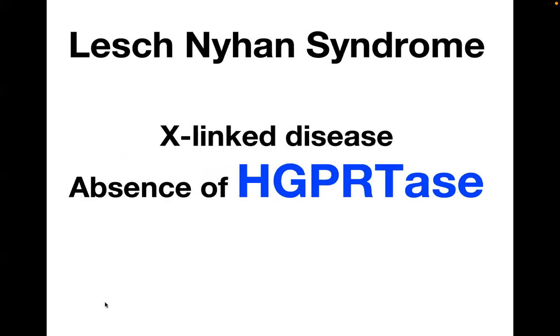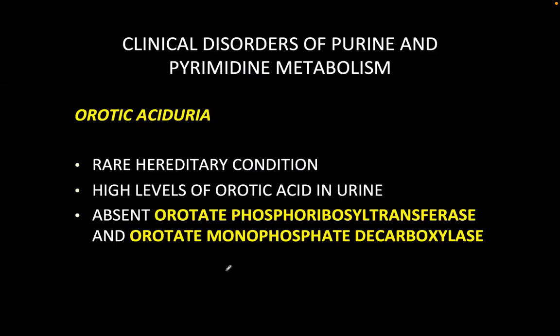Lesch-Nyhan syndrome is an X-linked disease associated with the absence of HGPRTase. There is also a disease of purine and pyrimidine metabolism called orotic aciduria — a rare hereditary disease characterized by elevated levels of orotic acid in the urine.